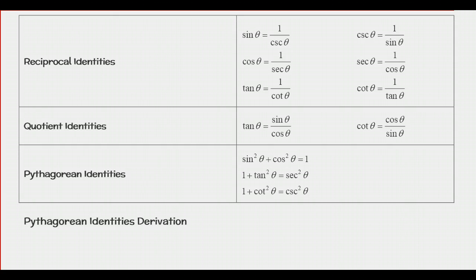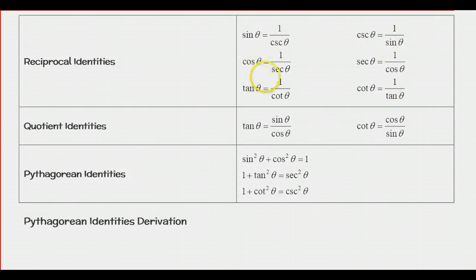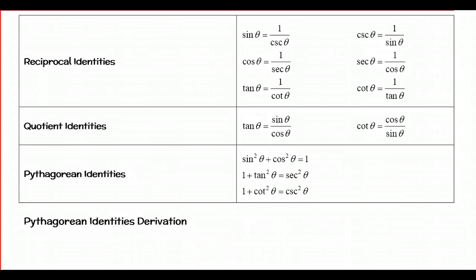For example, the sine and cosecant are reciprocals. So the sine of theta is equal to 1 over the cosecant of theta. Take a look carefully at these — the cosecant is 1 over the sine of theta. Then we move over to the quotient identities: the tangent of theta is sine over cosine, and the cotangent of theta is the reciprocal of that, so cosine over sine.